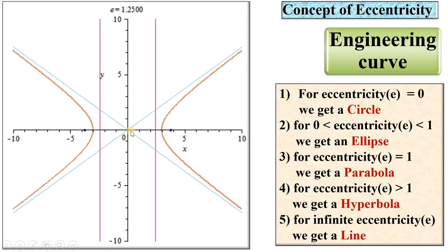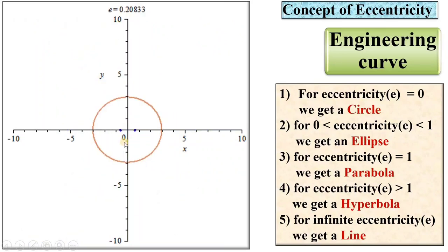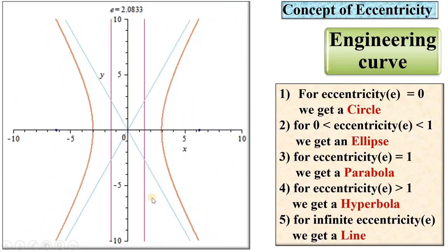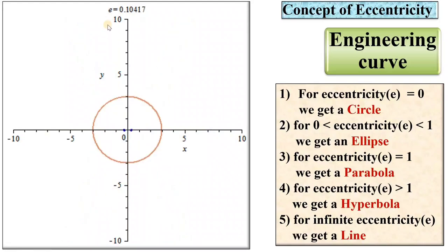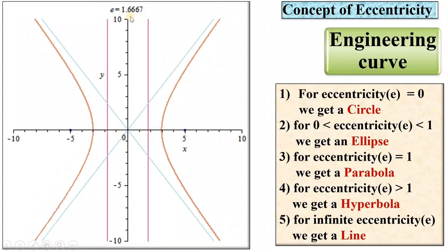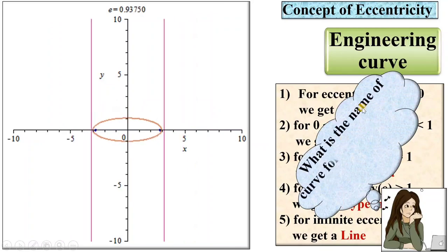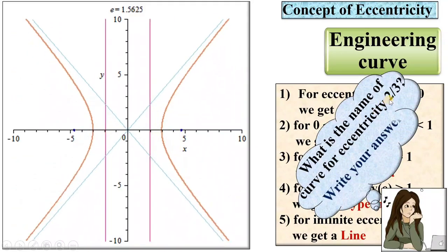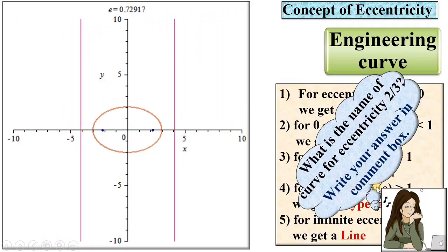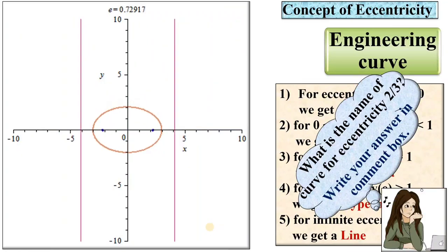Initially it is a circle, then eccentricity gradually increases, and at last it becomes a vertical line for infinite eccentricity. Look carefully — eccentricity is increasing gradually. What is the name of the curve for eccentricity equal to 2/3? Write your answer in the comment box. Thanks for watching this video; press the like button to appreciate it.